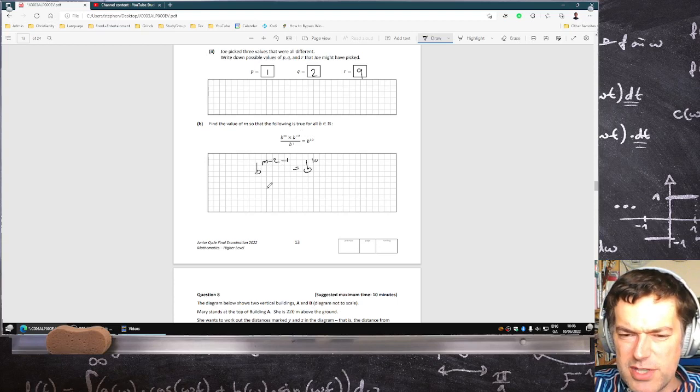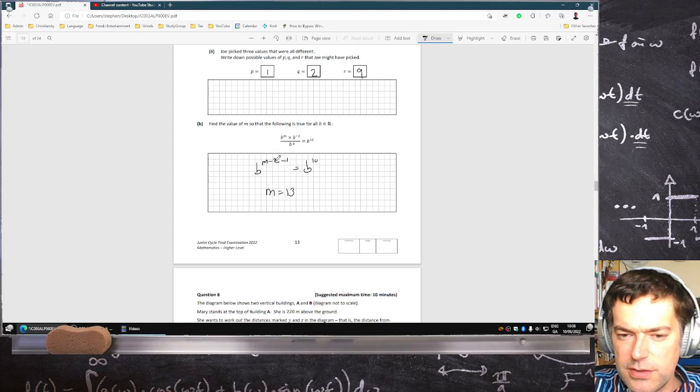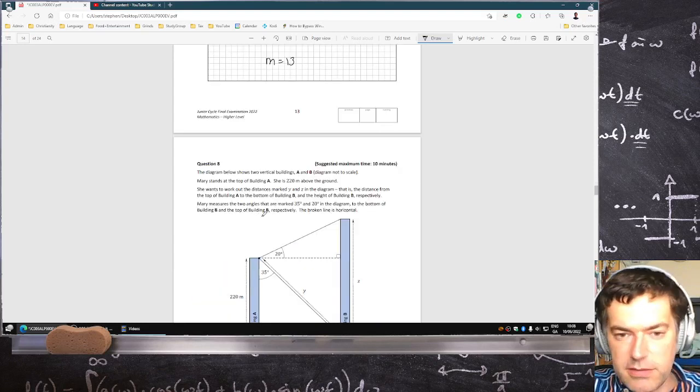And that's equal to B to the 10. So it has to be M is 13. Because 13 minus 2 minus 1 is 10. All right. That's another question done.